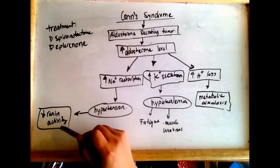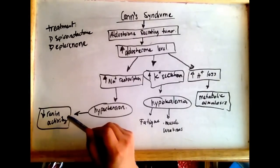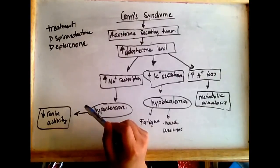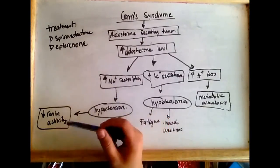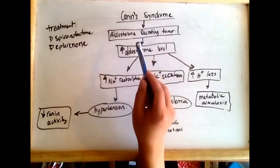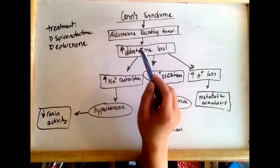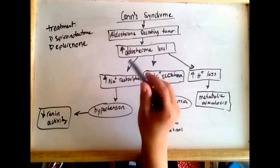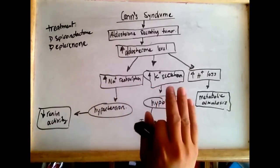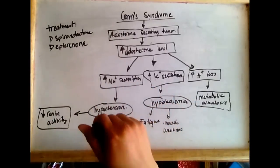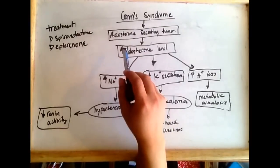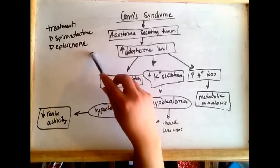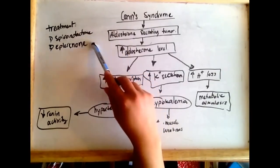The treatment for a unilateral adenoma secreting aldosterone, as found in patients with Conn's Syndrome, can be either surgical resection of the tumor, or medical therapy with aldosterone antagonists such as spironolactone or eplerenone.